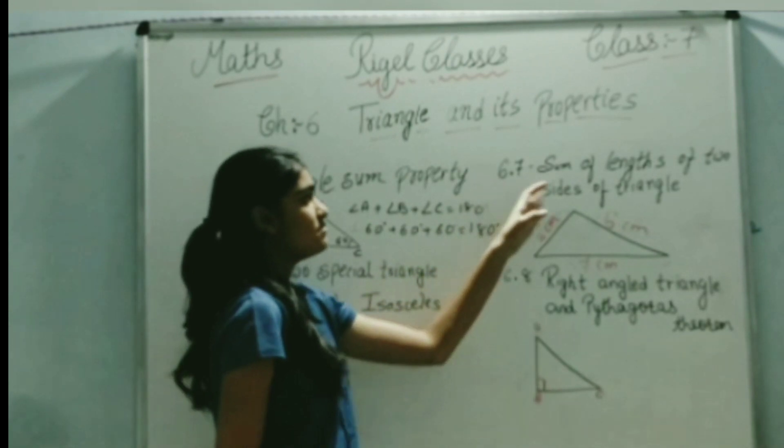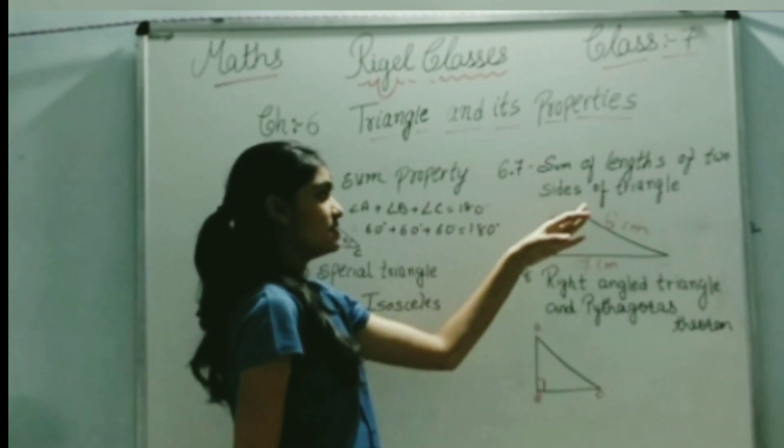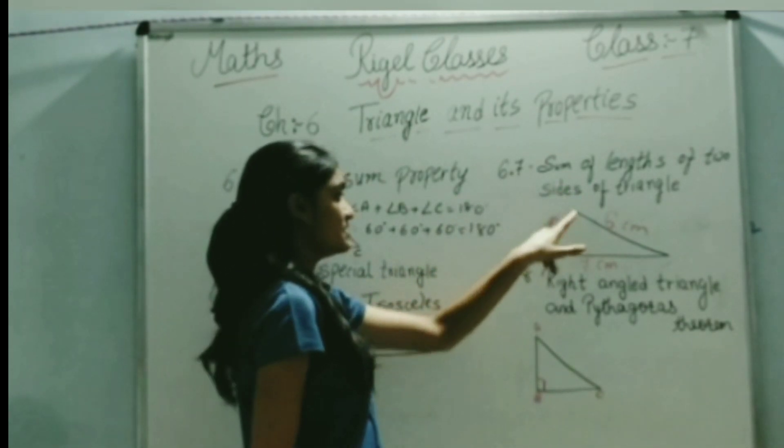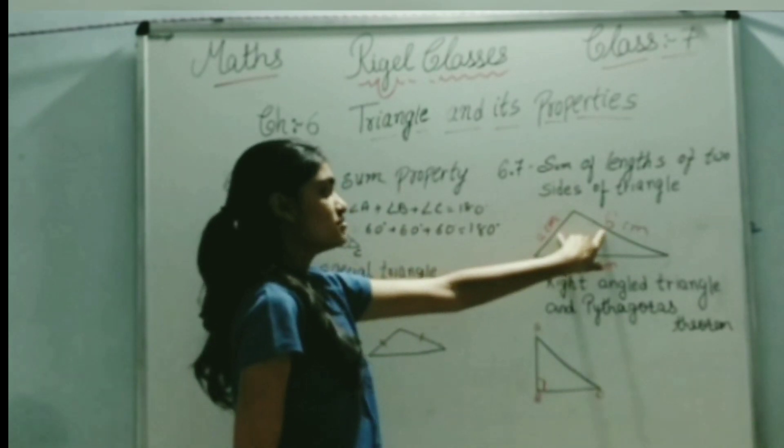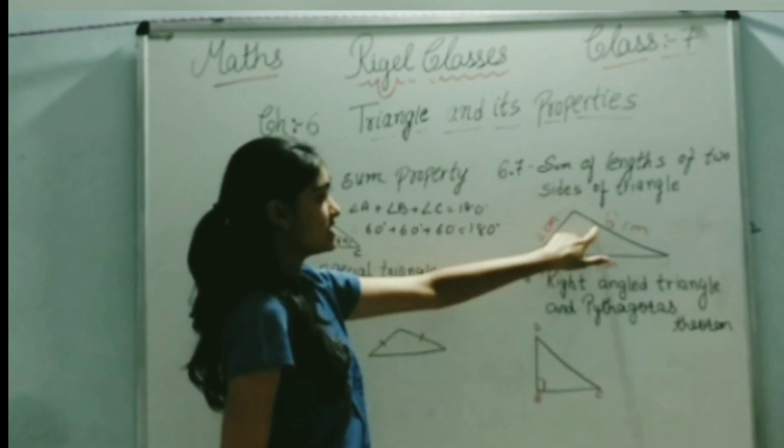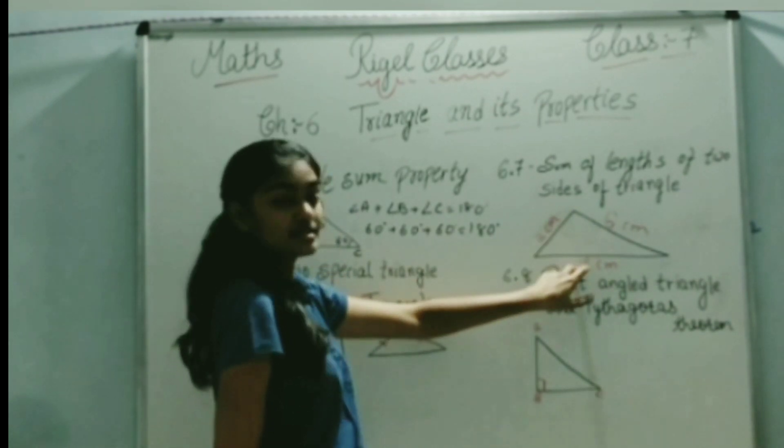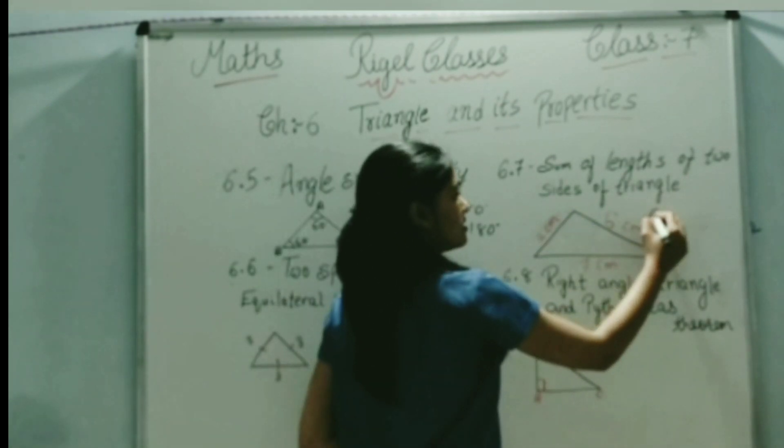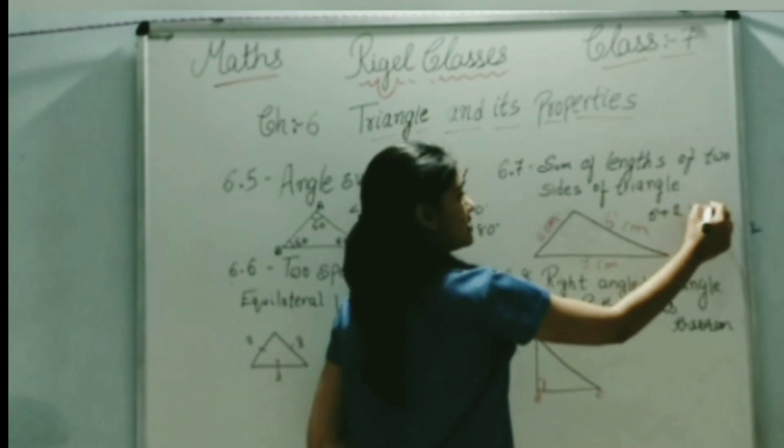Then we will see the sum of lengths of two sides of a triangle. This property says that if we add two sides, then it is always greater than the length of the third side. Here we can see 6 plus 2 equals 8, which is greater than 7.